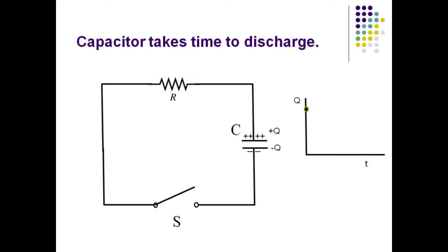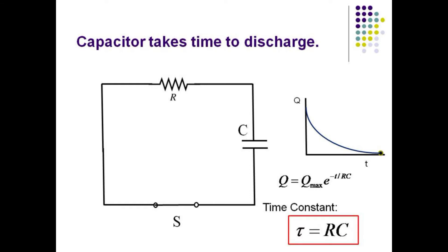A fully charged capacitor also requires time to discharge. Here is a capacitor ready to drain through the resistor once the switch is closed. After the switch has closed, the charge quickly moves from the positive side to the negative side to neutralize the charges in the capacitor. Eventually the current slows to a trickle as the capacitor is depleted of charge. The function describing the discharge of the capacitor with time is a decaying exponential: Q equals Q-max times E to the minus T over RC, where the characteristic time for the discharge is the RC time constant.